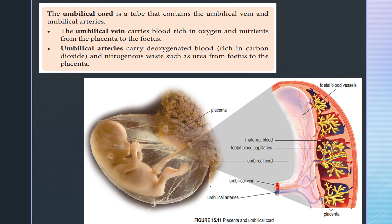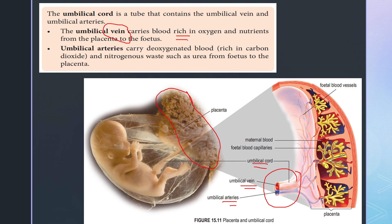Let's look at this picture showing the structure of the placenta. You can see the umbilical cord, the maternal blood, and the fetal blood capillaries, which are implanted in the endometrium. Inside the umbilical cord consists of the umbilical vein and also arteries. The umbilical vein's function is to carry blood rich in oxygen and nutrients from the placenta to the fetus.